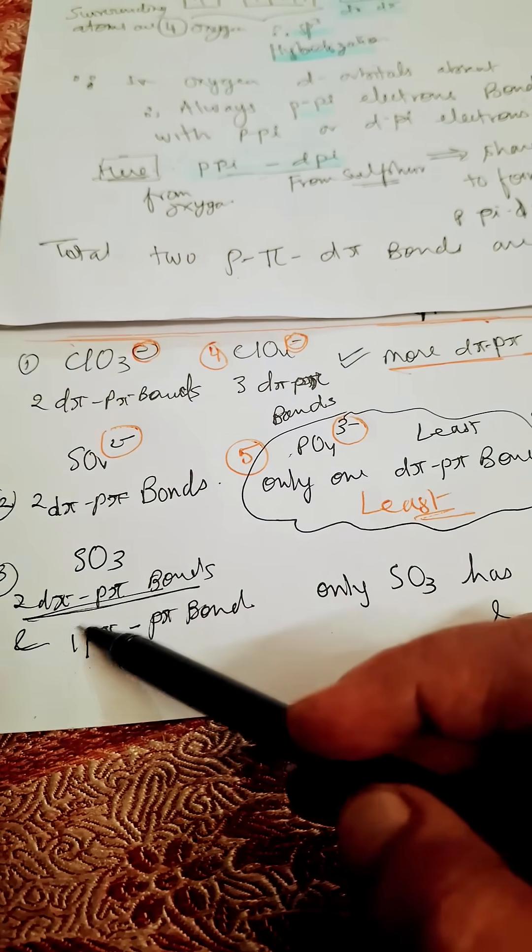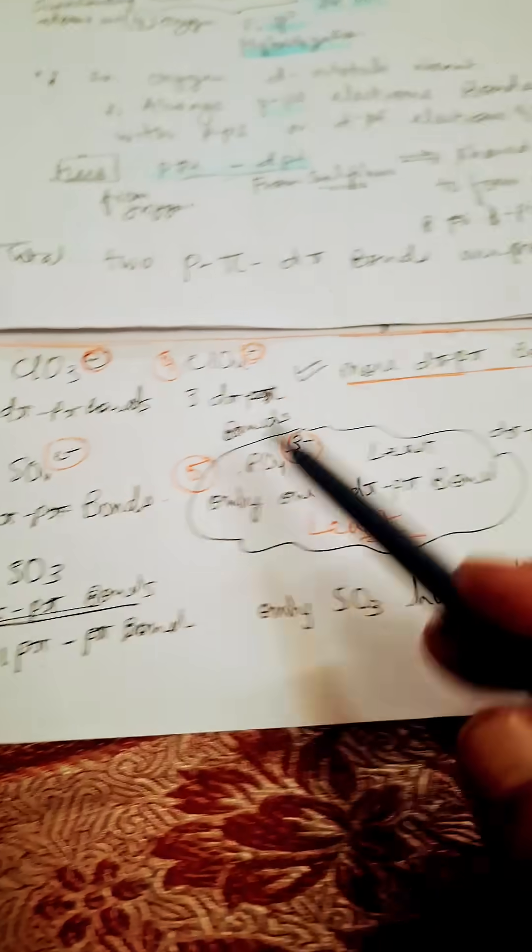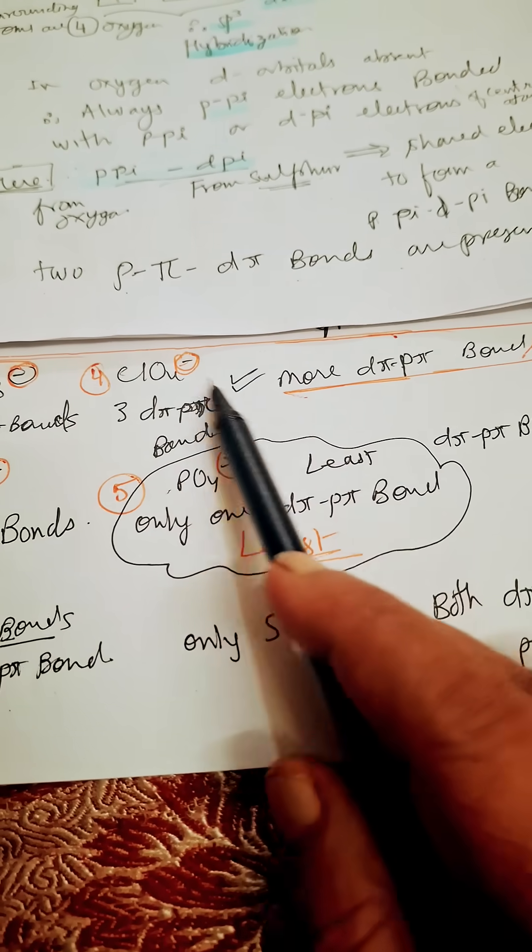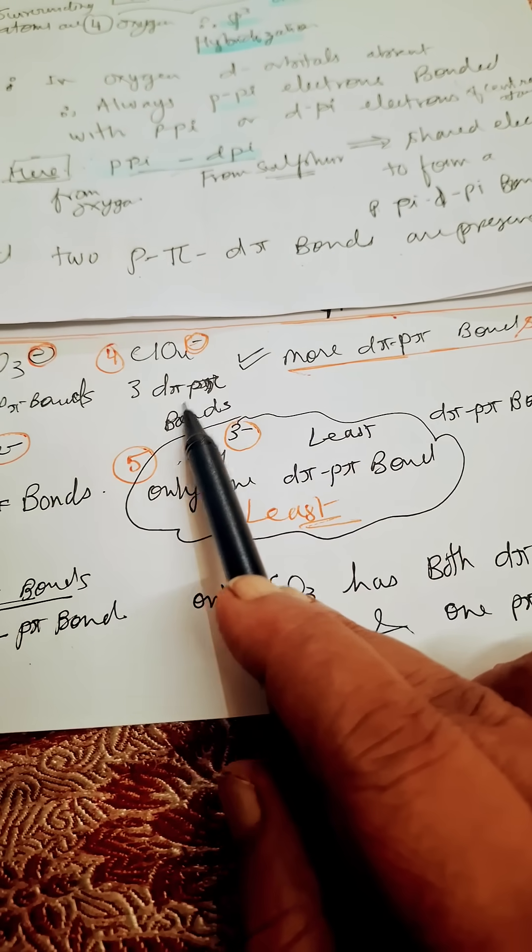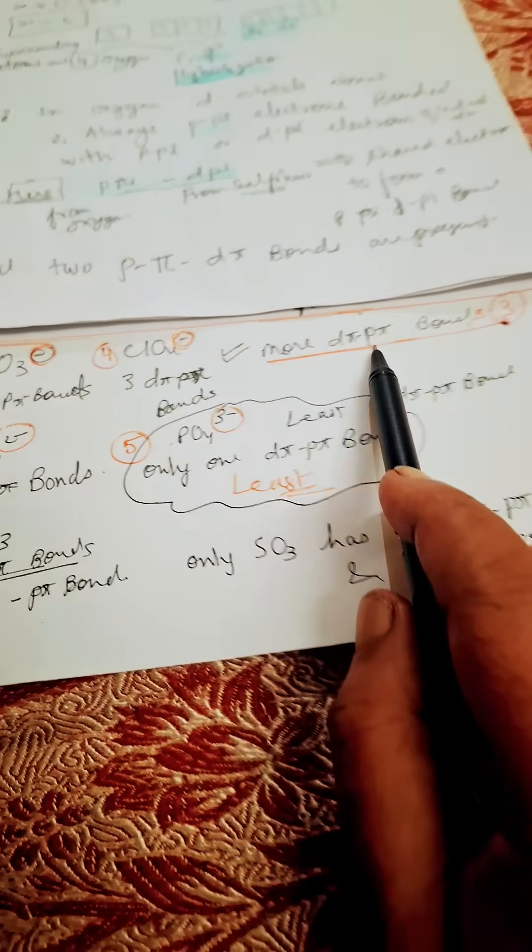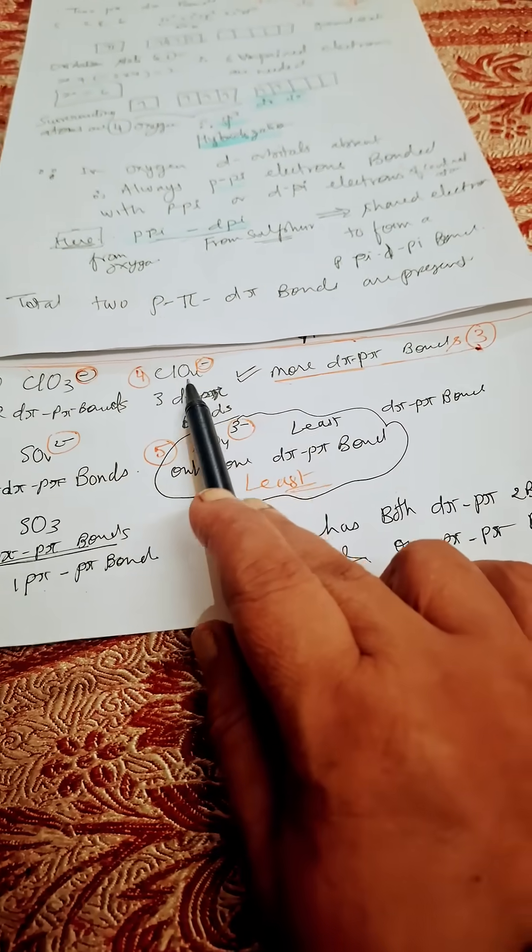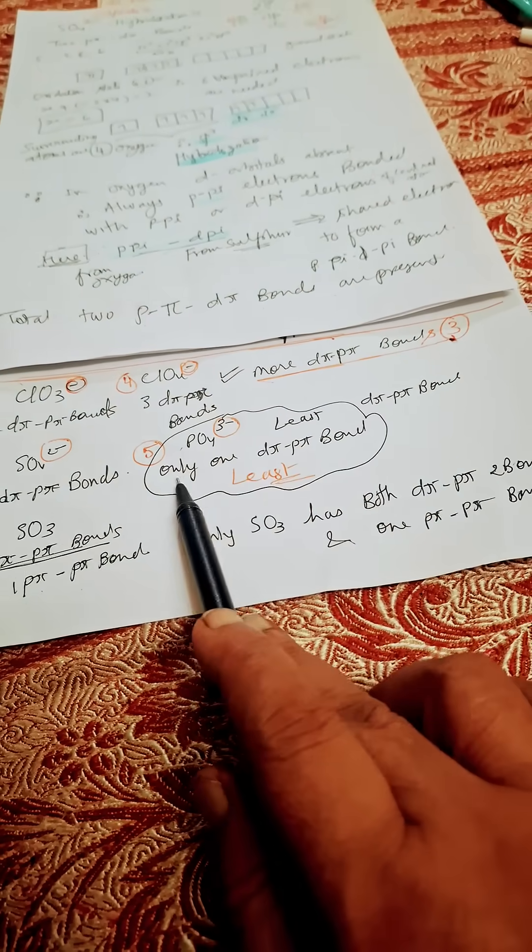...d-pi p-pi bonds - each having two d-pi. Here in case of ClO4-, it is having three d-pi p-pi only, so more d-pi p-pi bonds in the ClO4-. PO4: only one.